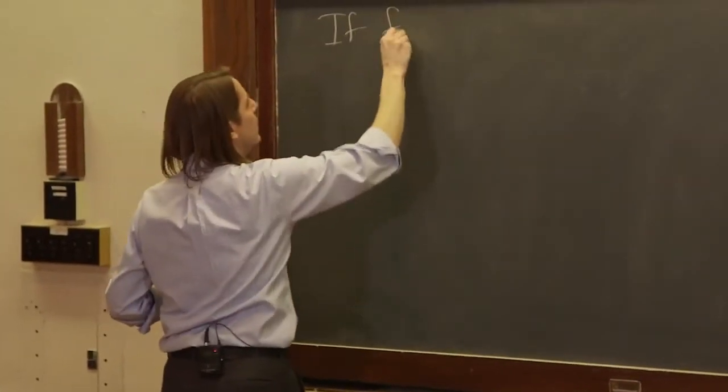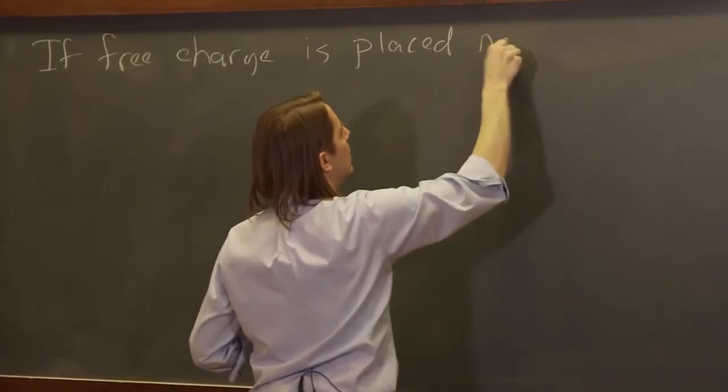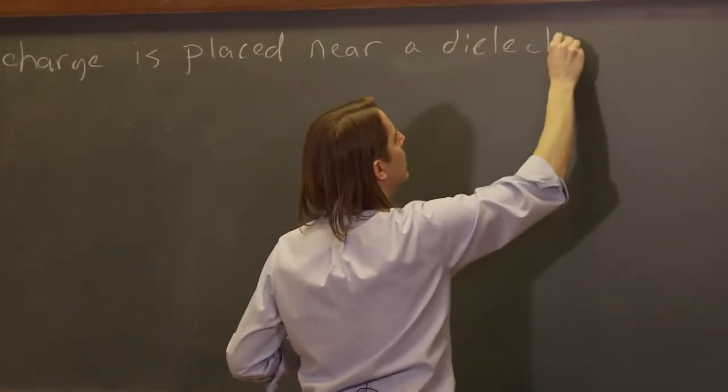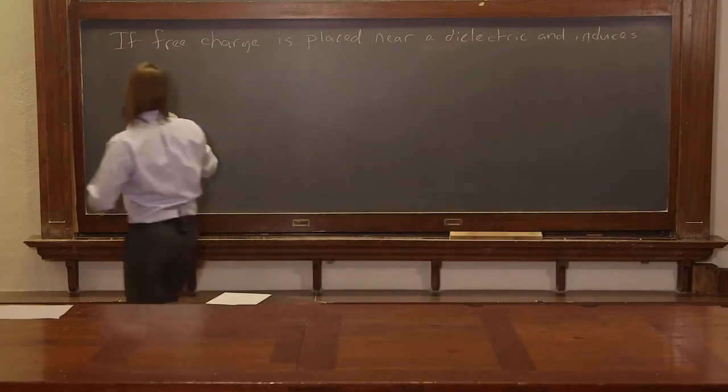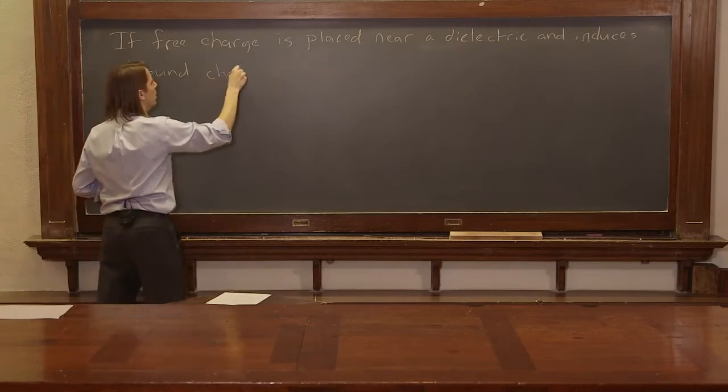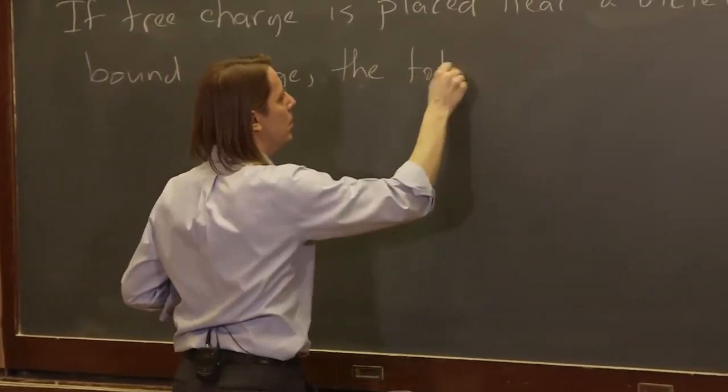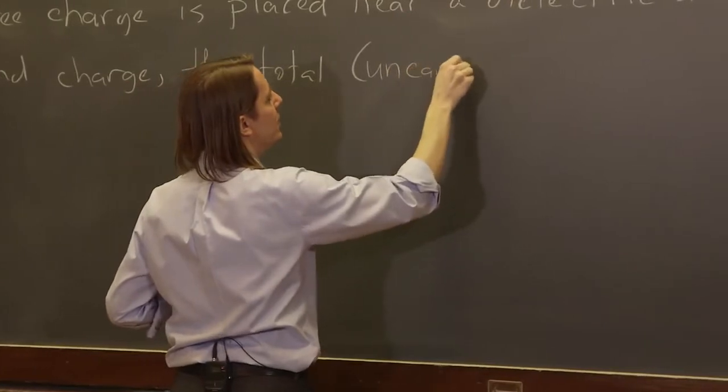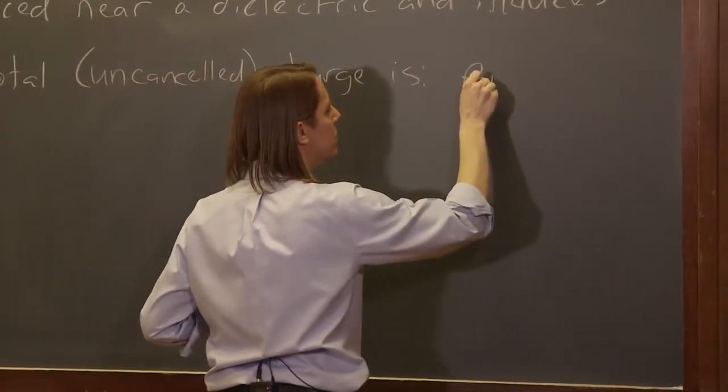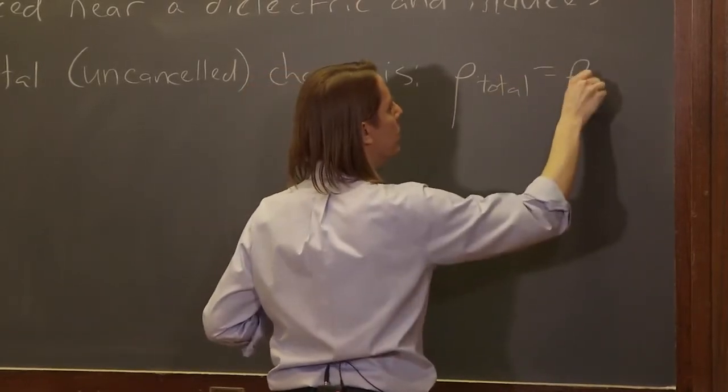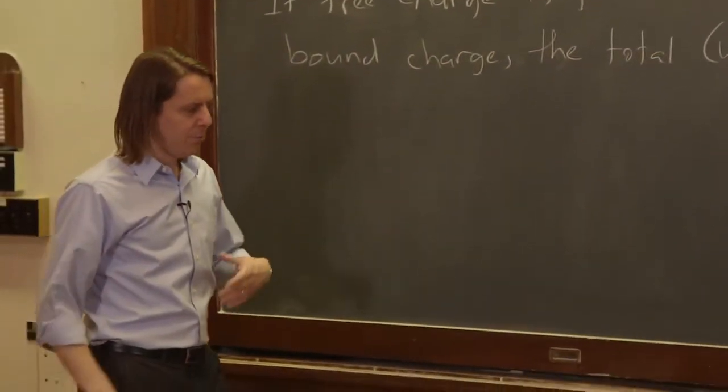If free charge is placed near a dielectric and induces bound charge, the total uncanceled charge is what? It's just rho total equals rho bound plus rho free. And they could be sigmas if they're surface charges, but let's assume for now that they're volume charges.